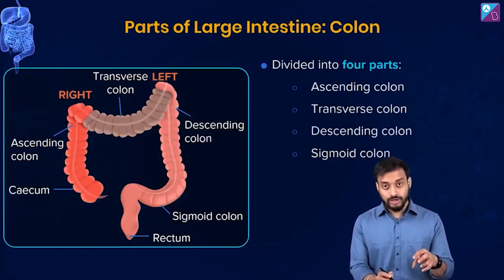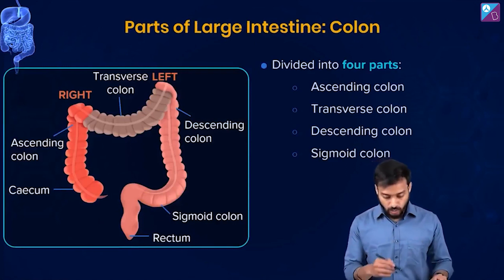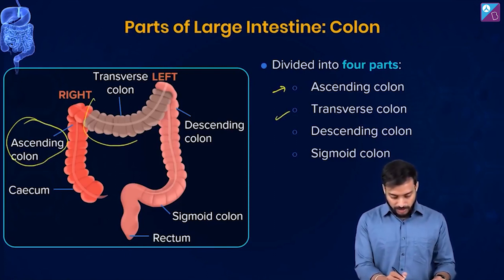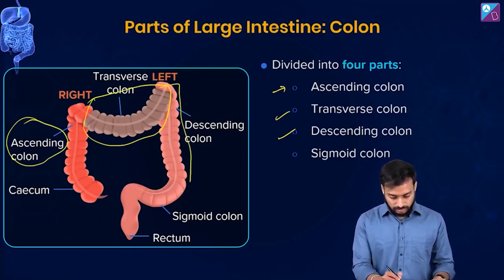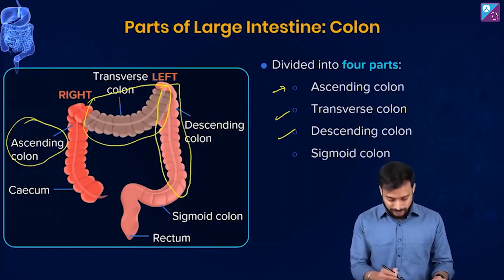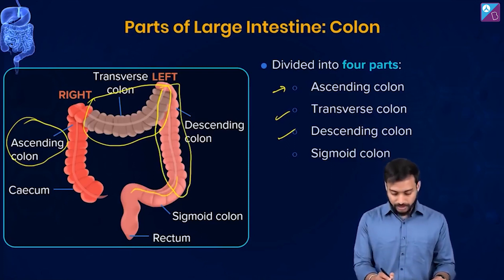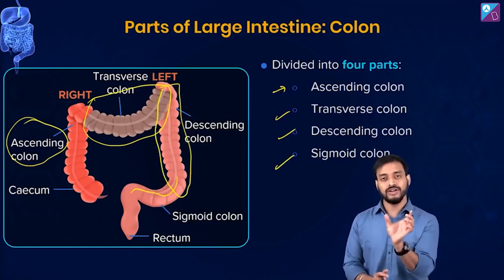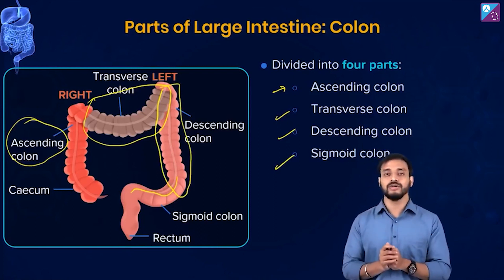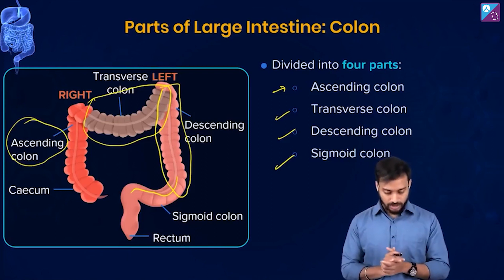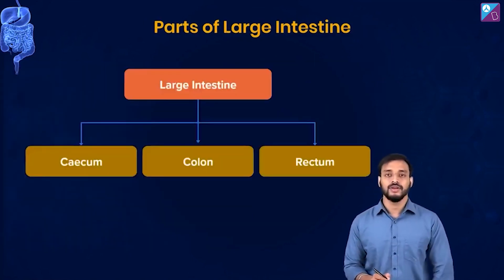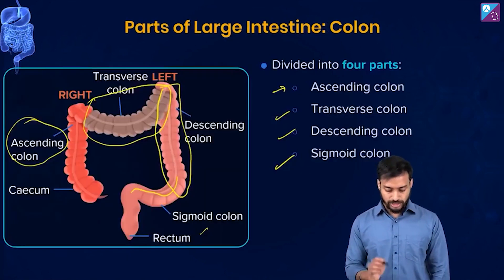The next part is the colon, which is quite large and is divided into four parts. Do you see the ascending colon? Then the transverse colon — this part. Then the descending colon — this part. And the sigmoid colon — named because of its shape. Please note these four parts of the colon: ascending, transverse, descending, and sigmoid.